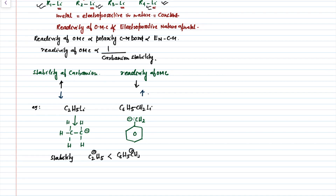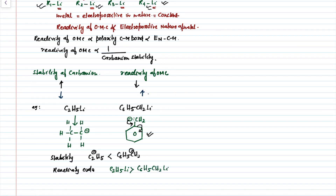Why? Because the benzyl carbanion has resonance — due to this resonance there is delocalization of the negative charge, and because of this delocalization the stability of the benzyl carbanion increases. So what is the reactivity order? The reactivity of ethyl lithium (C2H5Li) will be more than the reactivity of benzyl lithium (C6H5CH2Li).